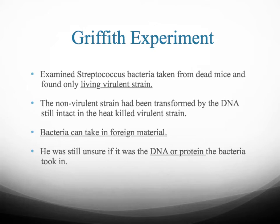When the mouse died unexpectedly, Griffith then took out some of the bacterial cells from the dead mouse, plated them, and found that he only saw the living virulent smooth strain. So something had transformed the original rough bacteria into the virulent smooth bacteria, and he was suggesting it was DNA that had transformed it. He was unsure whether it was DNA or protein — he was leaning toward protein, but scientists need more proof. Griffith's experiment was not enough to definitively show it was DNA. DNA or protein — that was still the question.